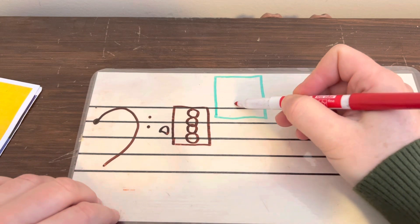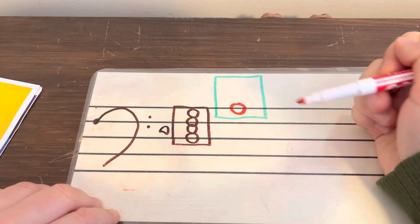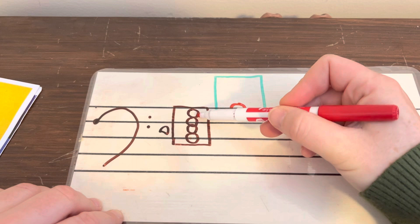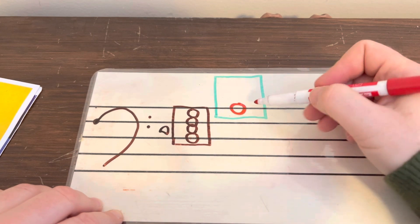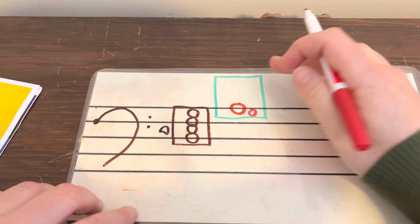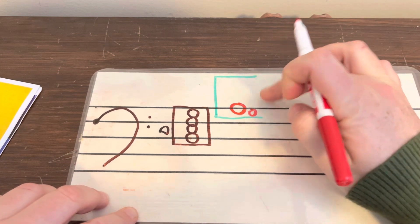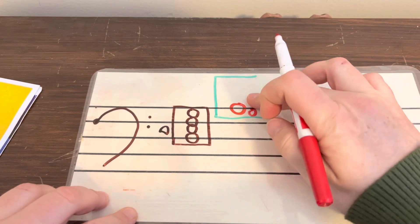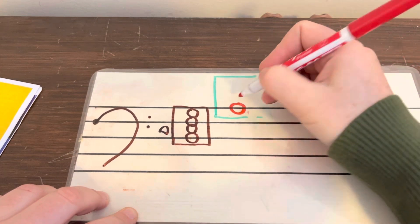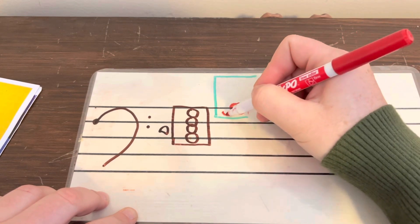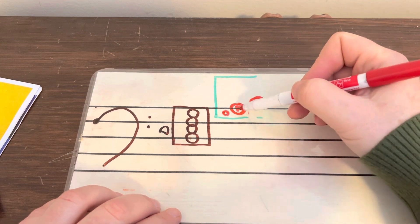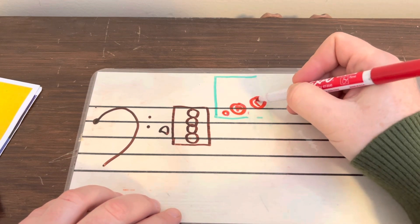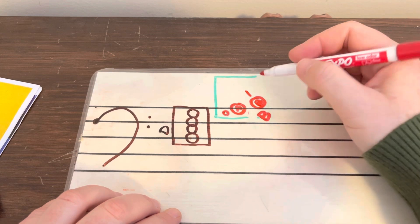So we have, here is where our open A string is. Remember we have open, one, three, four. The next one up is our open A string. I'm going to open this up so we can draw them lengthwise. So that's our A open. Then we have B. We're following our pattern of line space. B, first finger. That's kind of hard to see. We'll go like that.